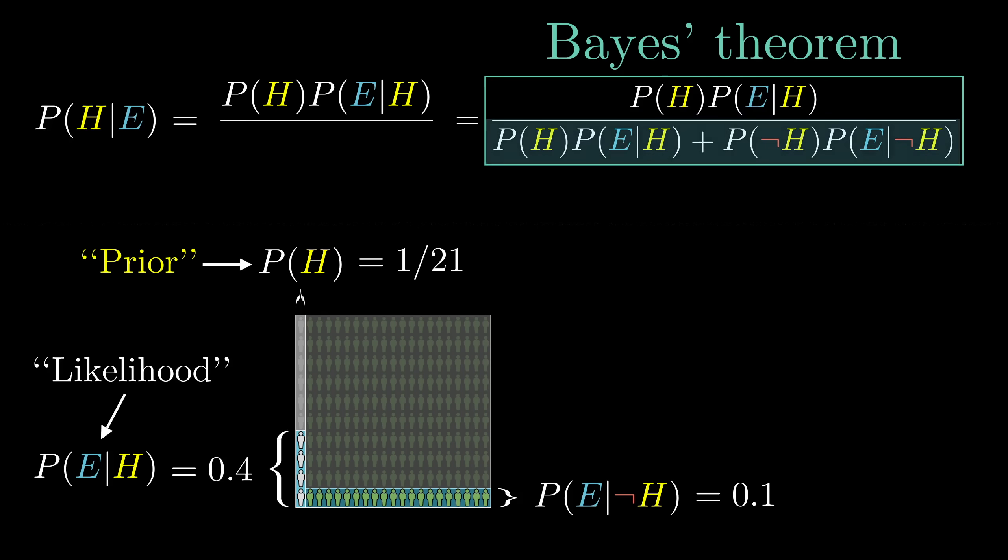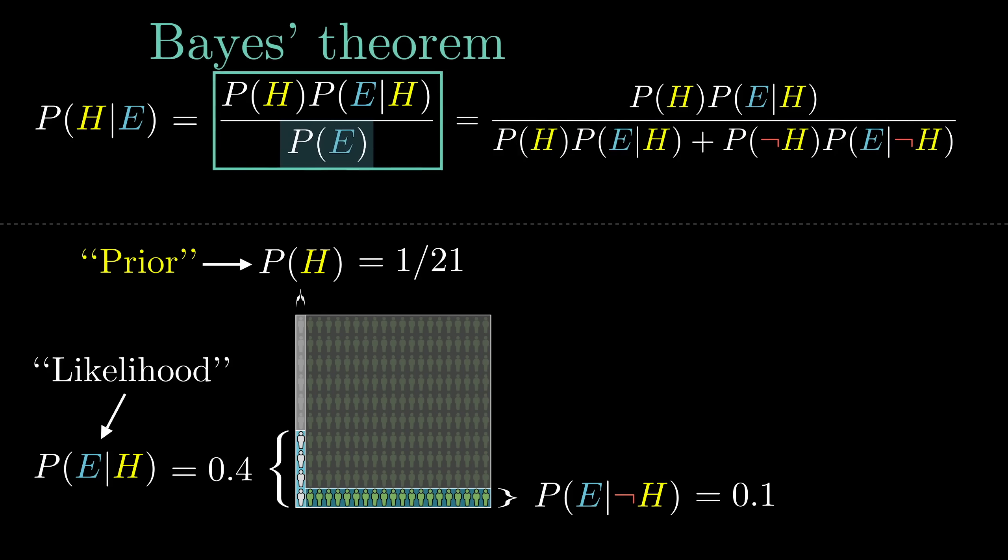More often, you see this denominator written simply as P(E), the total probability of seeing the evidence, which in our example would be the 24 out of 210. But in practice, to calculate it, you almost always have to break it down into the case where the hypothesis is true and the one where it isn't.